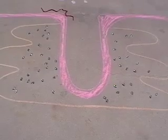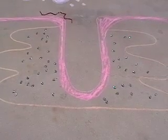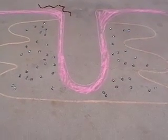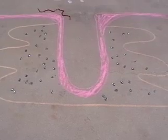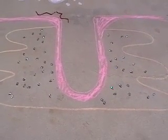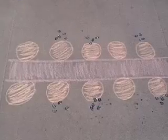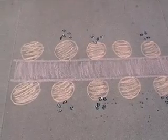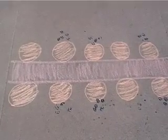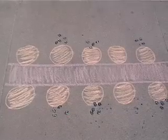When the action potential reaches the T-tubules, it releases calcium from the terminal cisternae of the sarcoplasmic reticulum, where it is held by calsequestrin. The calcium ions then bind to the troponin on the thin filament, pulling the tropomyosin off the active site.